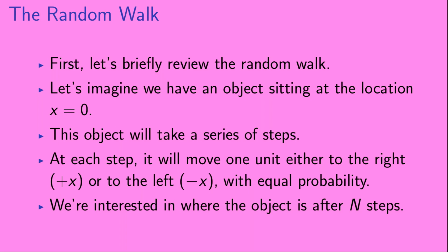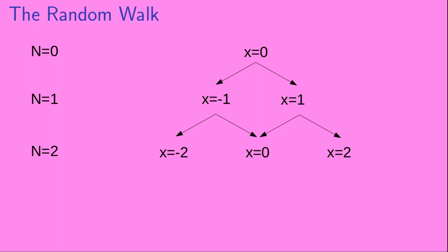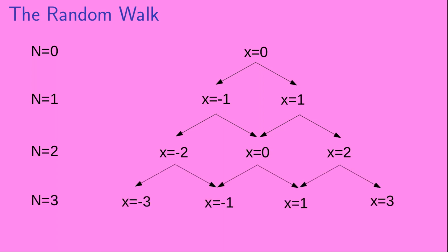We're interested in where the object is after n steps. The object starts at position x equals 0. After one step, that's n equals 1, the object can be at either x equals 1 or x equals minus 1. At n equals 2, the object can be at x equals minus 2, x equals 0, or x equals positive 2. And at n equals 3, the object can be at x equals minus 3, x equals minus 1, x equals 1, or x equals 3, and so on.